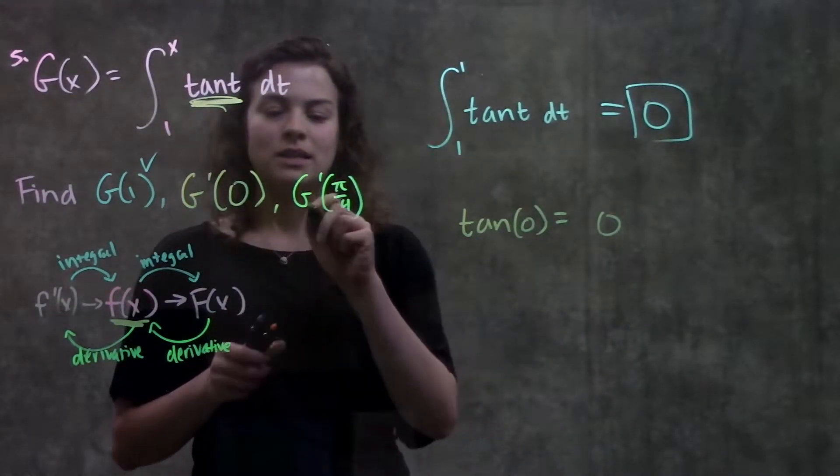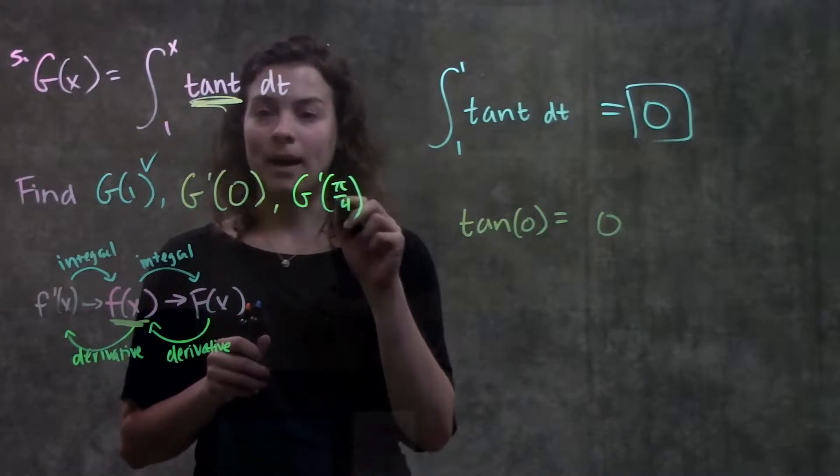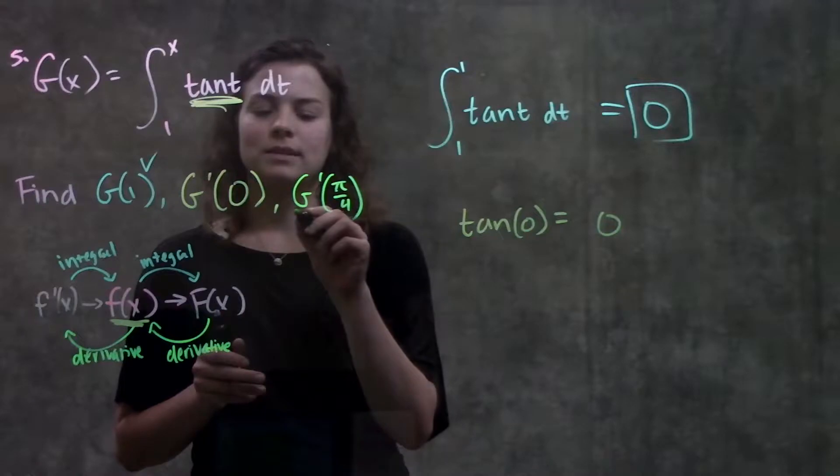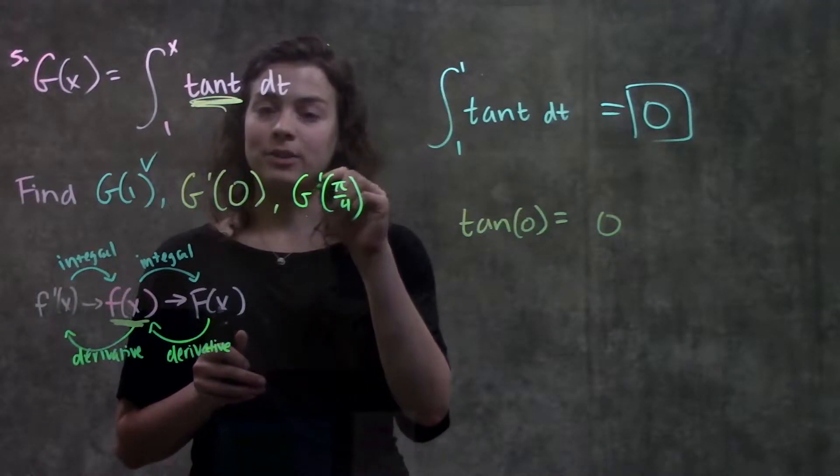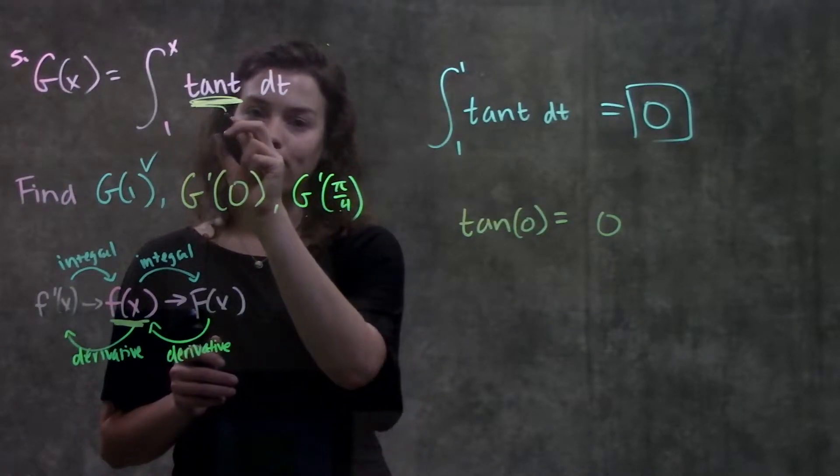And going on to the next part, it's the same thing. It's asking for big g prime of pi over 4. So it's asking us to take this integral and take the derivative of it. In other words, go back to our original function and plug in pi over 4.